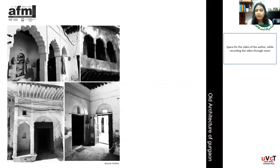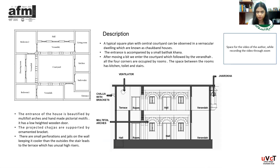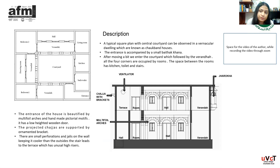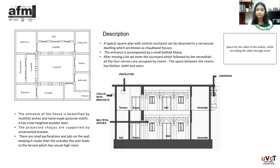Now we will know about the old architecture of Kurgaon. A typical square plan with a central courtyard can be observed in a vernacular dwelling, known as the Chogman House. The entrance is accompanied by a small bath khana. After moving in, we enter the courtyard followed by the veranda. All four corners are occupied by rooms, and the spaces between the rooms have the kitchen, toilet, and stairs. The entrance is beautified by multifoiled arches and handmade pictorial motifs — basically of flowers, petals, and godly figures. It has a low-height wooden door. The projected chajas are supported by ornamented brackets. There are small perforations and jalis on the wall, keeping it cooler than the outside.